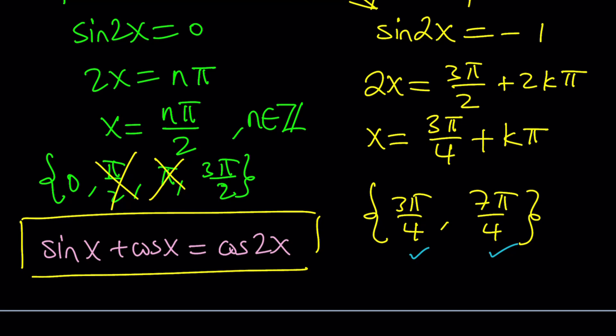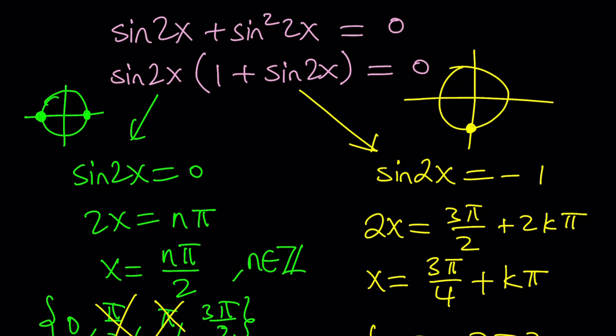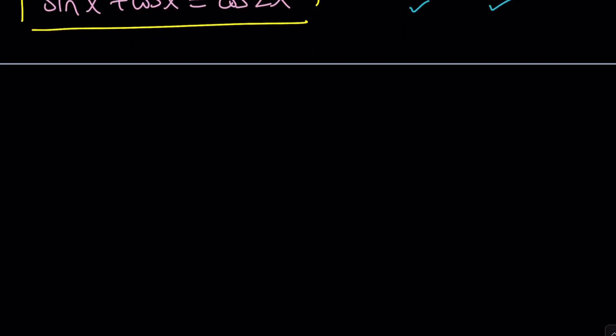Okay, so this is basically the first method, squaring both sides, and then just using some identities. This is where we get. Okay, let's go ahead and take a look at the second method.